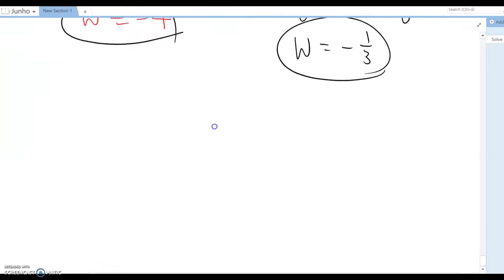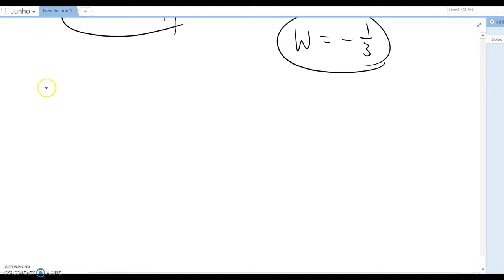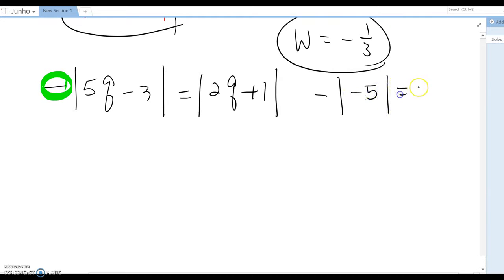Now next one, what about this question: -|5q - 3| = 2q + 1? As we did before, we can only consider one side as absolute box, but here look carefully.